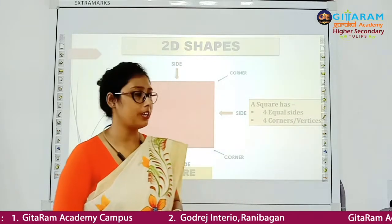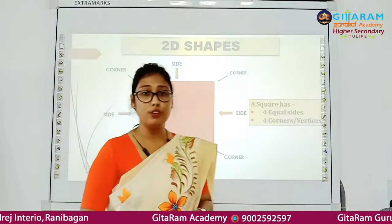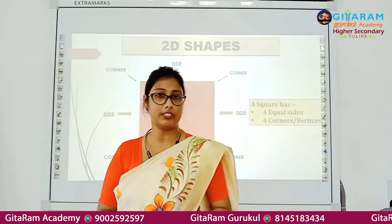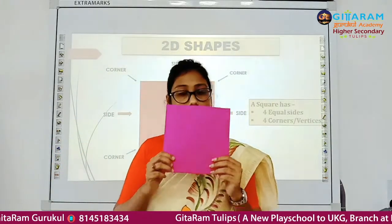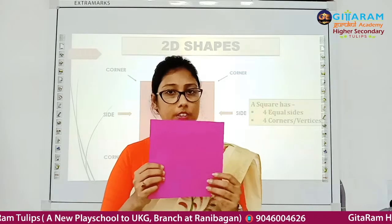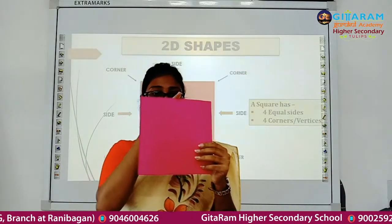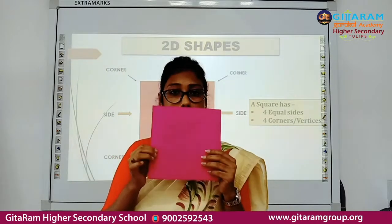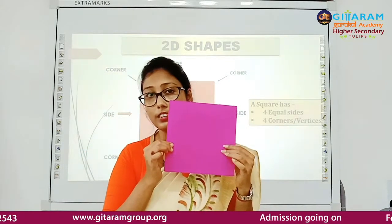Our first 2D shape is square. It has four sides and four corners or vertices. Let us count — it is a square. See, on a flat surface, no thickness, no depth. It has four sides: 1, 2, 3, 4. Four sides.